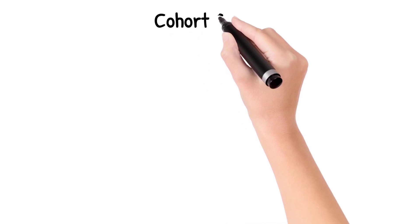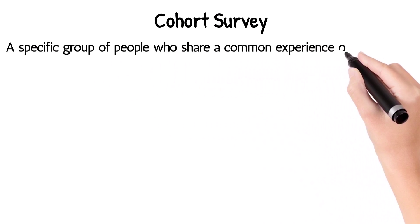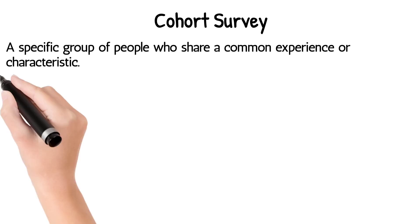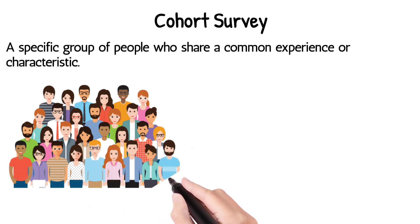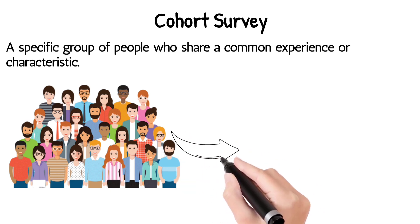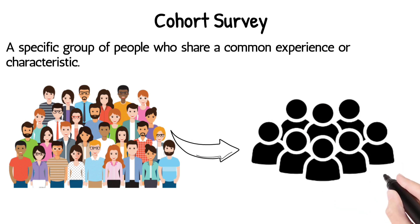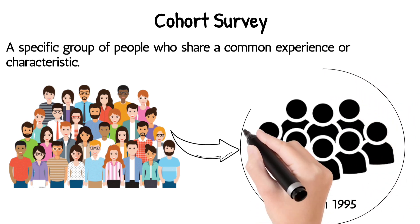Now, let's move on to cohort surveys. In a cohort survey, researchers follow a specific group of people called a cohort who share a common experience or characteristic, like being born in the same year or starting school together. In this scene, we can see the people on the left are the population of our study, and the group on the right all share a common characteristic: they were all born in 1995. This group is a cohort.